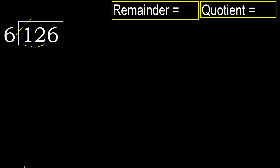But not greater. 6 multiplied by 3 is 18 — 18 is greater. 6 multiplied by 2 is 12, is not greater. Ok, 12 minus 12 is 0.